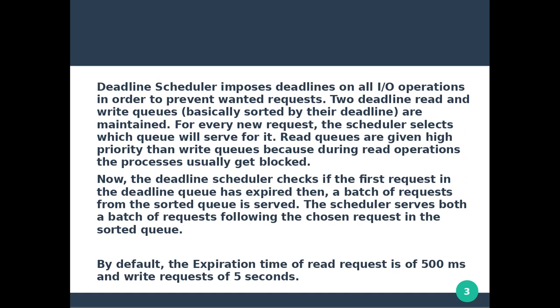The deadline scheduler checks if the first request in the deadline queue has expired. If so, a batch of requests from the sorted queue is served. After the deadline job is completed or expired, a batch of requests that arrived for execution are served next. The scheduler serves both a batch of requests following the chosen request in the sorted queue.